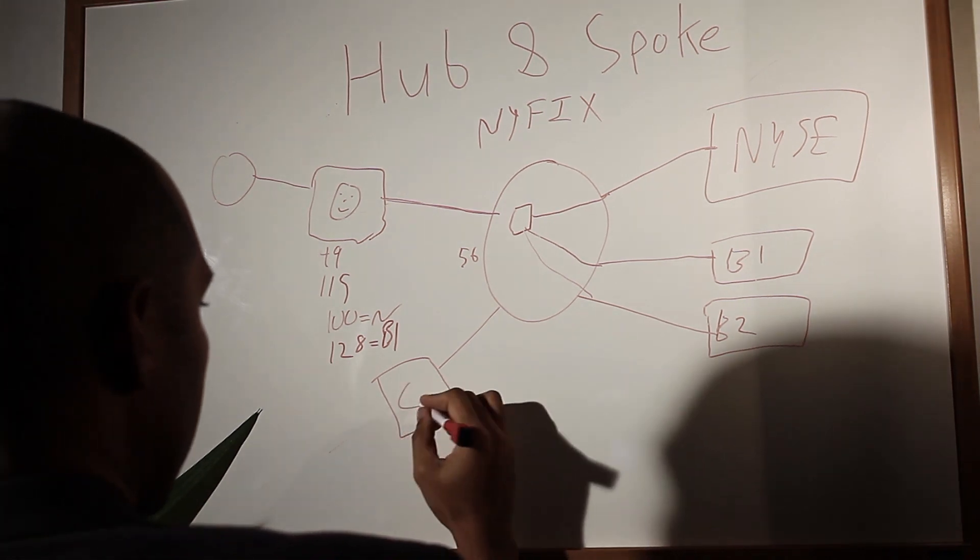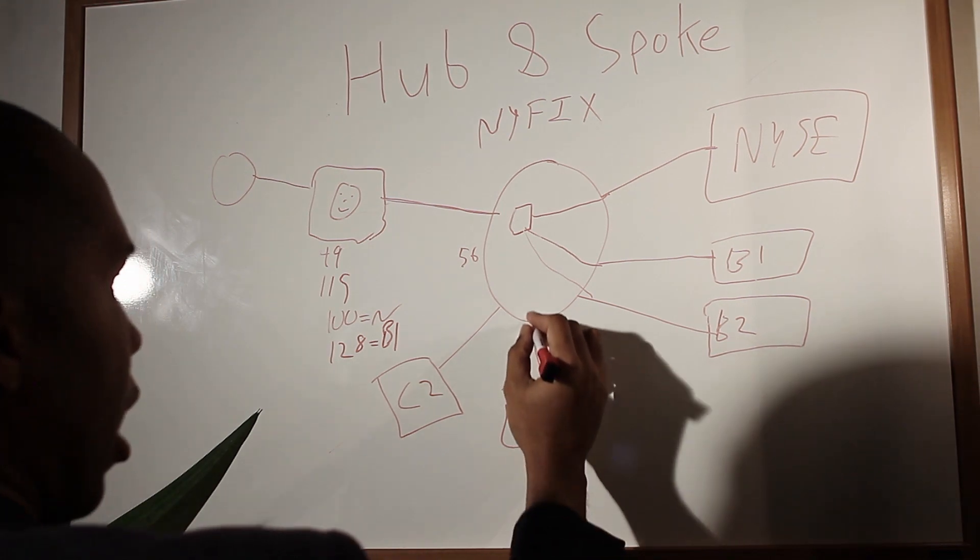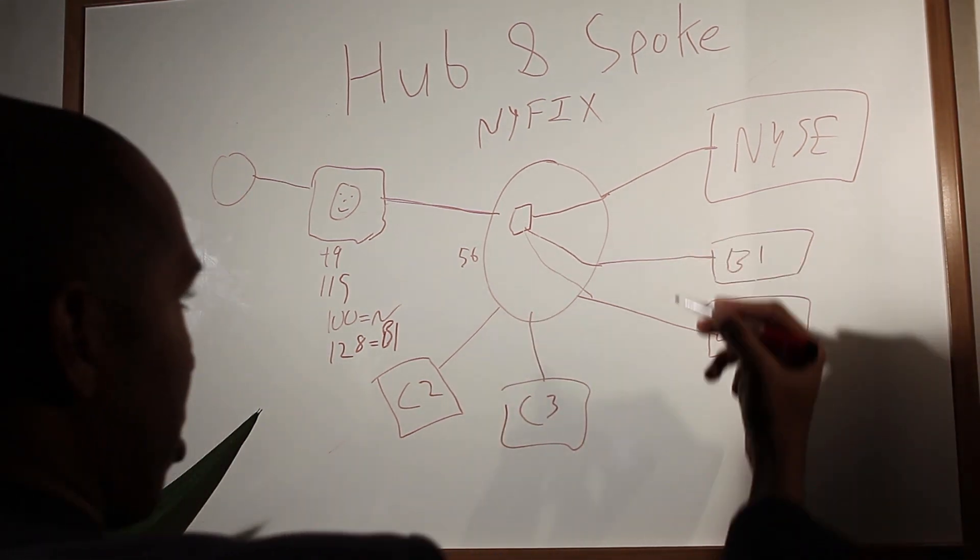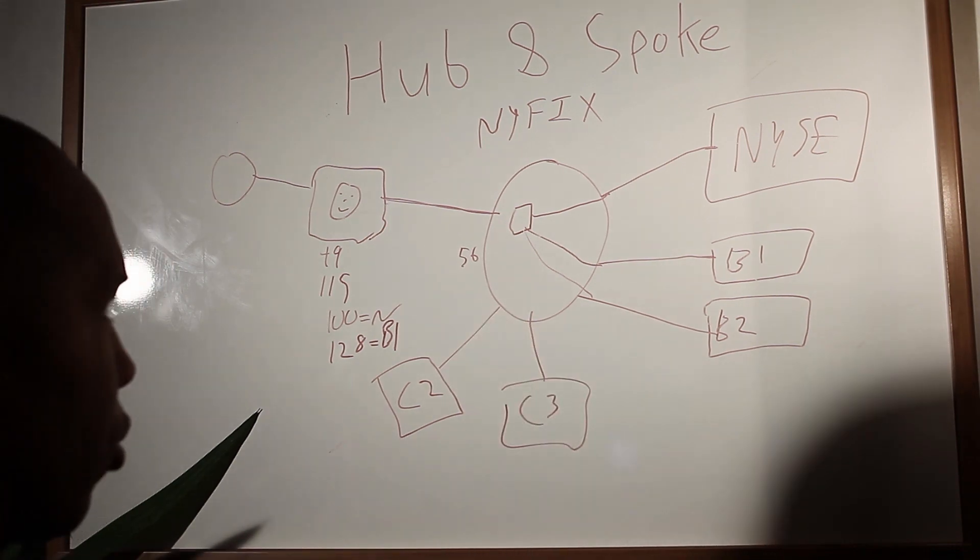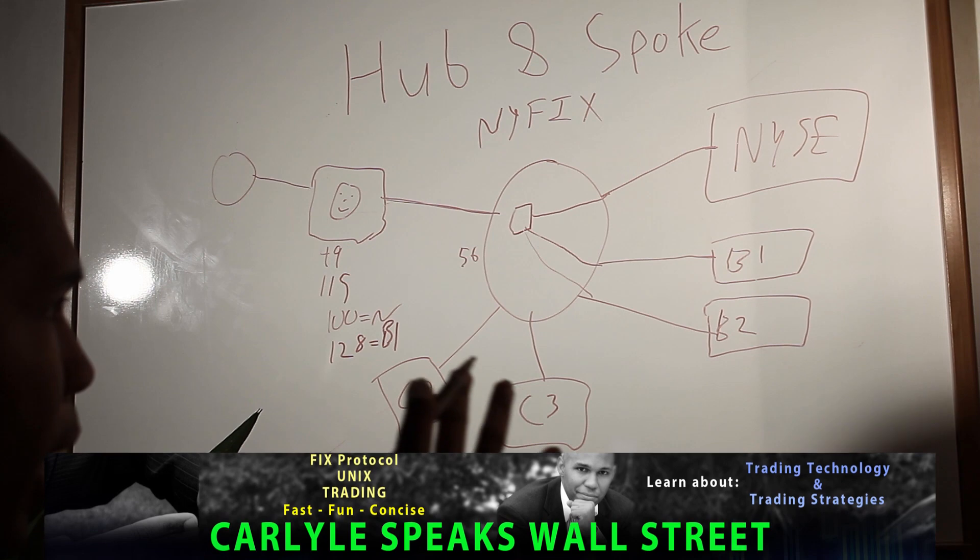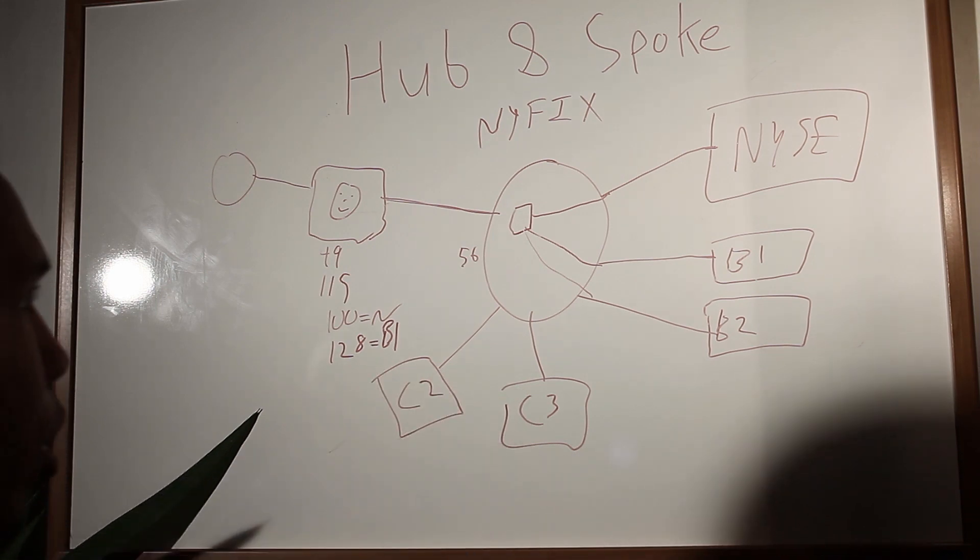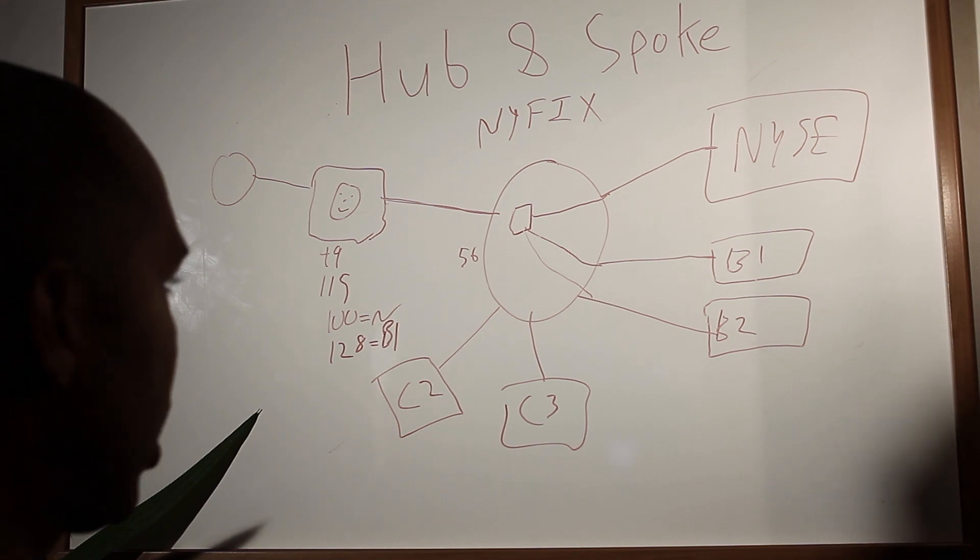So you have another client, client number two, client number three, and that is how you know when these executions are coming back in. You know how to deliver them appropriately, because you have the deliver to comp ID. So that's the basic structure of how a hub and spoke network works, and an explanation of what the purpose of this kind of network is.